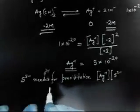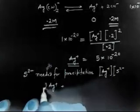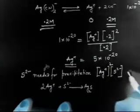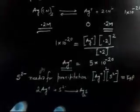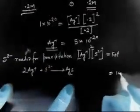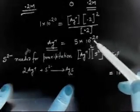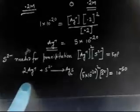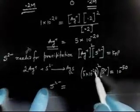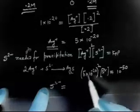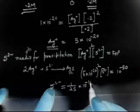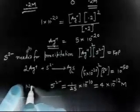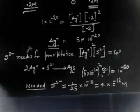For precipitation of Ag₂S: 2Ag⁺ + S²⁻ → Ag₂S, so KSP = [Ag⁺]² × [S²⁻] = 1×10⁻¹⁵. With [Ag⁺] = 5×10⁻²⁰, we get (5×10⁻²⁰)² × [S²⁻] = 1×10⁻¹⁵. So [S²⁻] = 10⁻¹⁵ / 25×10⁻⁴⁰ = 4×10⁻¹² M. This is the [S²⁻] needed for Ag₂S precipitation.